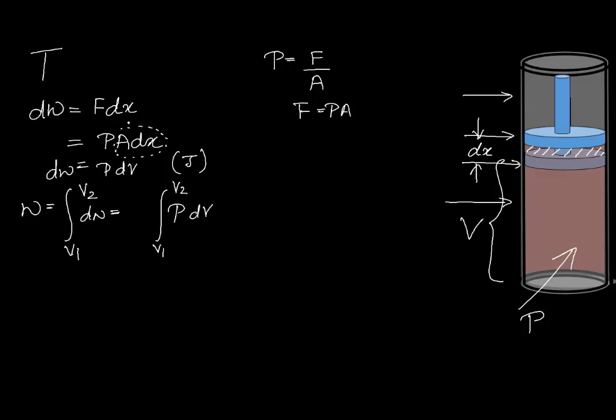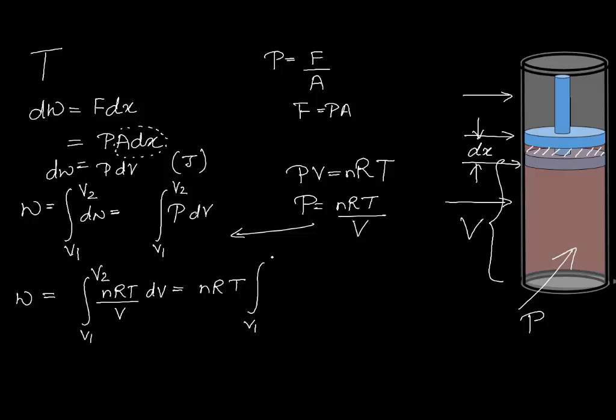We know the ideal gas equation, PV equals nRT. And therefore, I can substitute for P as nRT divided by V and I can plug it in over here. So the total work done by our gas, going from V1 to V2, is going to be nRT by V dV. All the constant terms can be taken out. Remember, temperature is a constant, so it comes out of the integral.